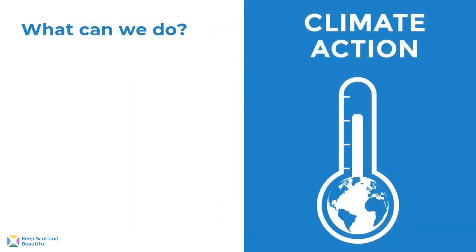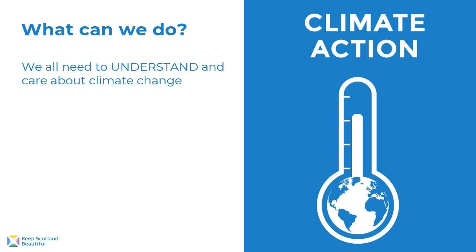So what can you do for your climate action topic? There are three main parts to climate action and you can choose which ones you want to work on. As a first step, we all need to understand and care about climate change. You can use your environmental review to consider how much everyone in your school understands climate change and if this needs to be improved.